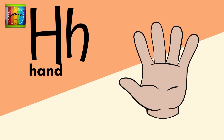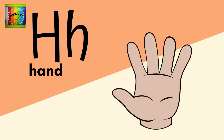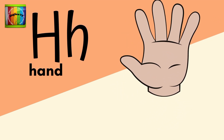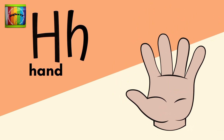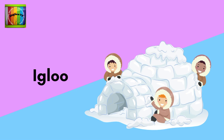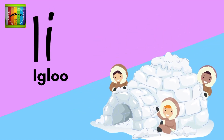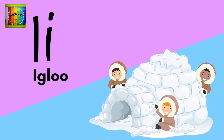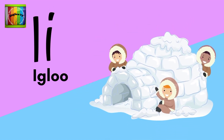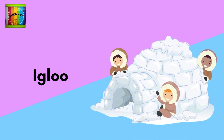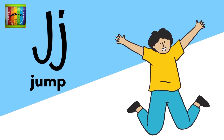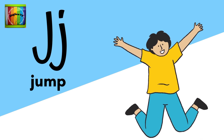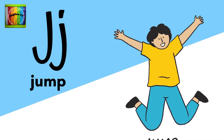H is for hand. H, hand. I is for igloo. I, igloo. J is for jump. J, jump.